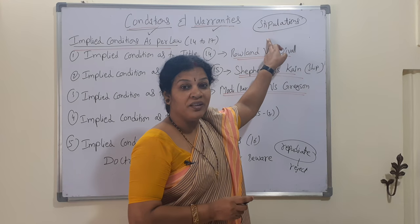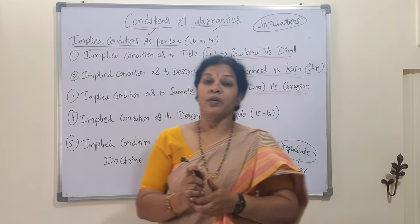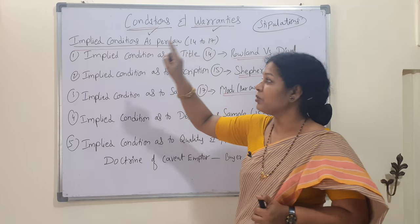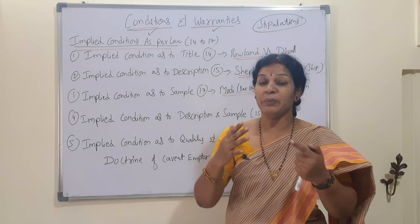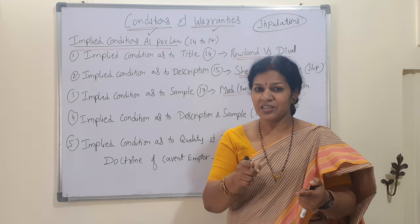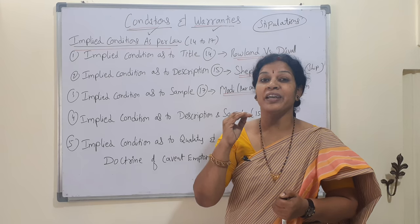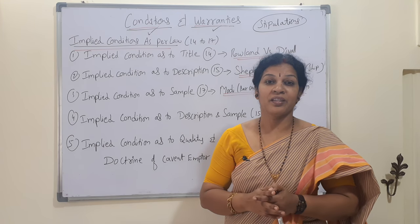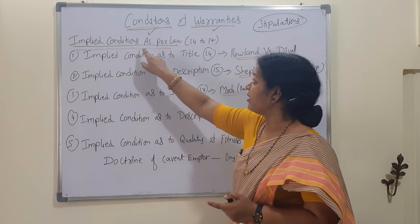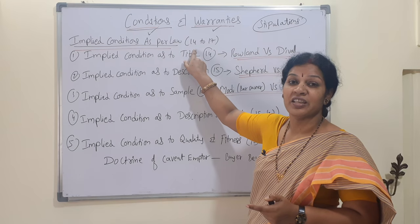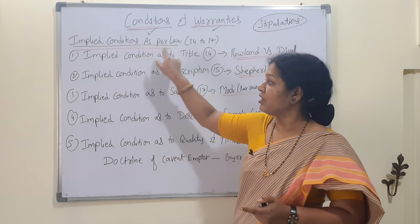Now, what are the stipulations — the important rules and conditions — that we are discussing? Related to conditions and warranties, we are going to discuss implied conditions, which is a very important topic. Implied means these qualities and conditions must be present; unless they are applied, a contract cannot be a contract. These implied conditions are discussed in sections 14 to 17.